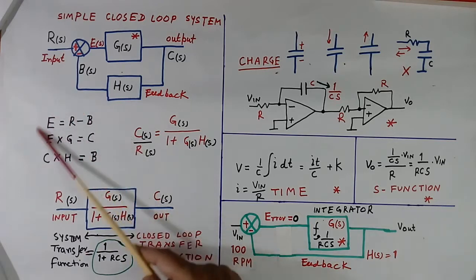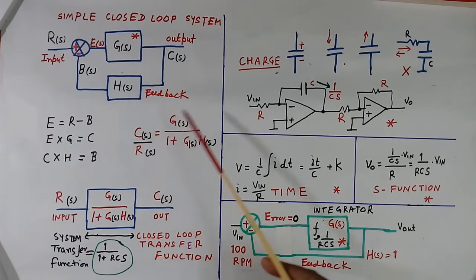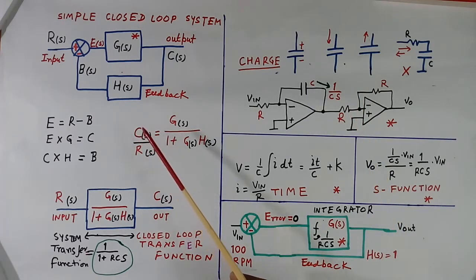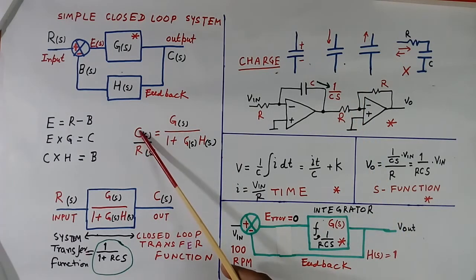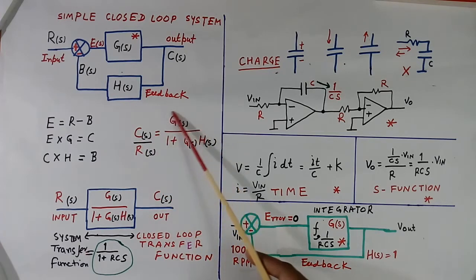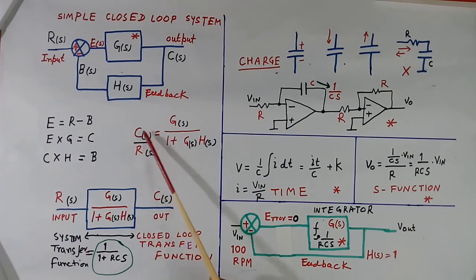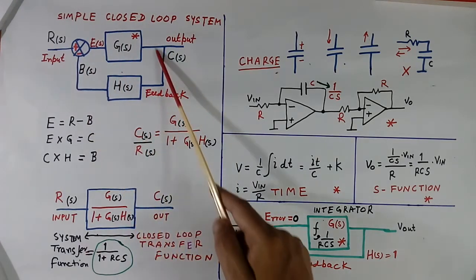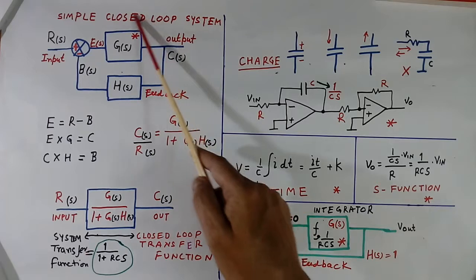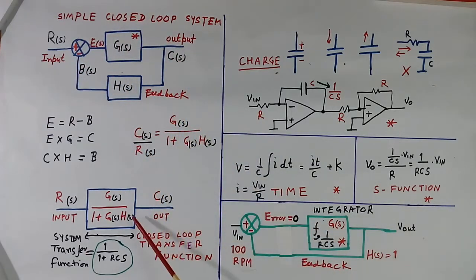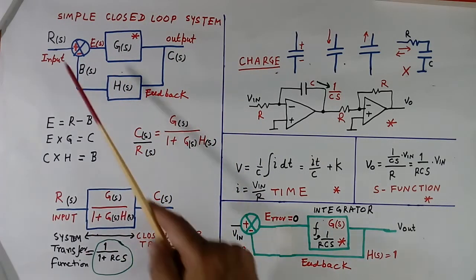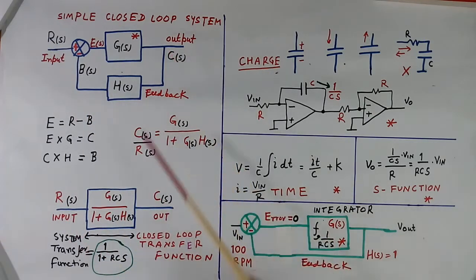If you calculate these three equations — take a paper and pen without depending on the books — you can do it easily. You calculate C by R and you get this result. C is the output, R is the input. This is output divided by input, which means the whole transfer function. So the transfer function of this whole block is this, which is written here.